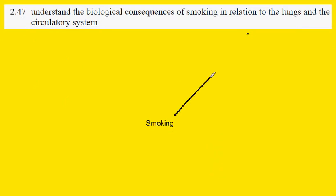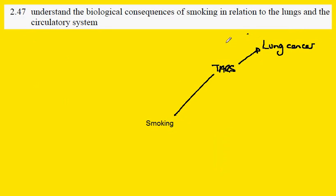The first thing to consider are the tars in cigarette smoke. The tars can bring about lung cancer. They contain chemicals called polycyclic hydrocarbons, and these attack the cells of the lung and cause cancers.